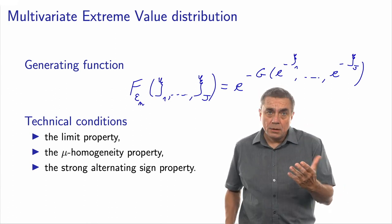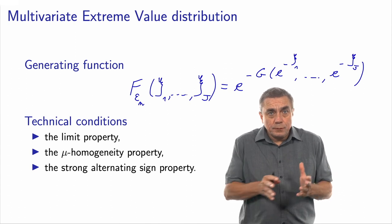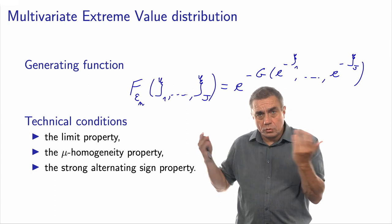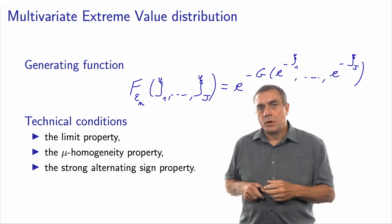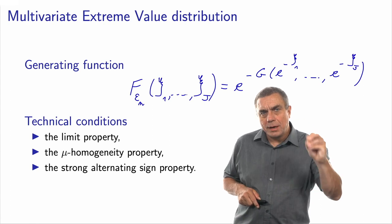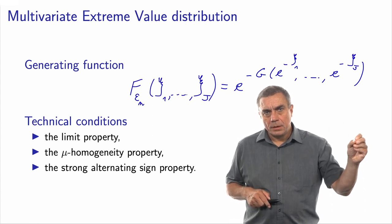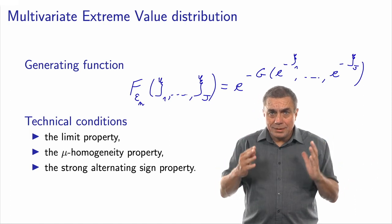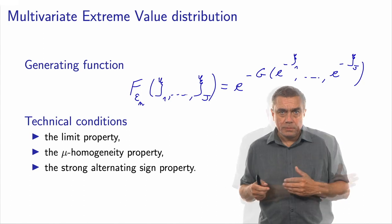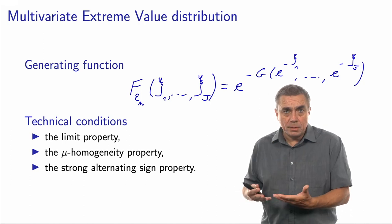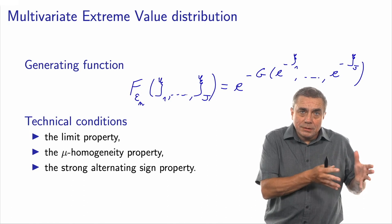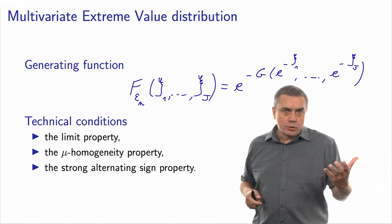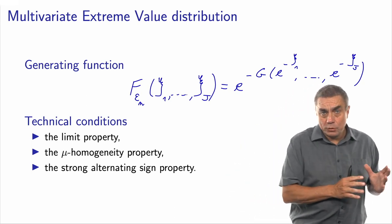Two comments about it. The first one is that the CDF is defined from another function that I denote capital G, which has as arguments J parameters. We will call this function the generating function. The idea of MEV models is that we will think about it in terms of G and not in terms of F. If I have a generating function G, I can build the CDF using this formula. So we basically focus on G instead of focusing on F.